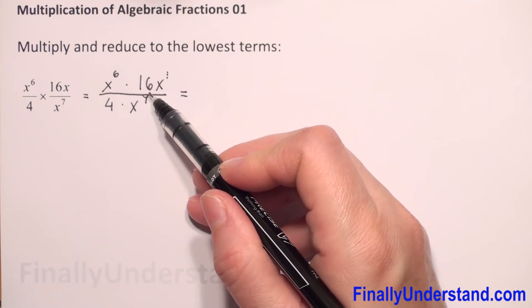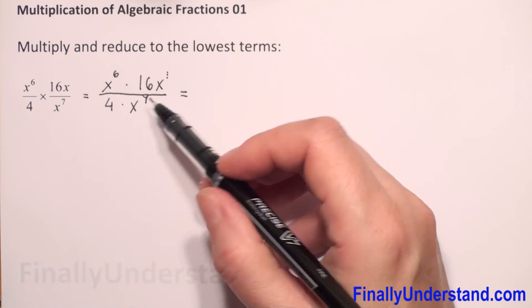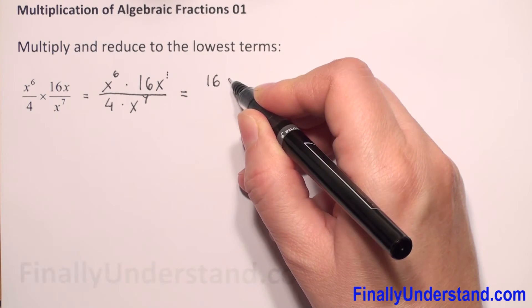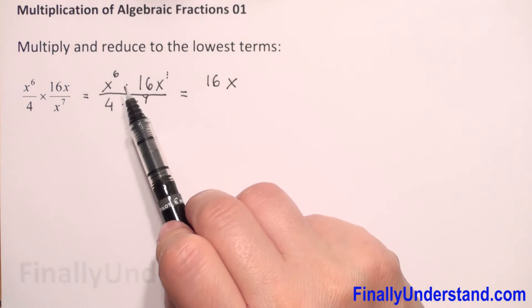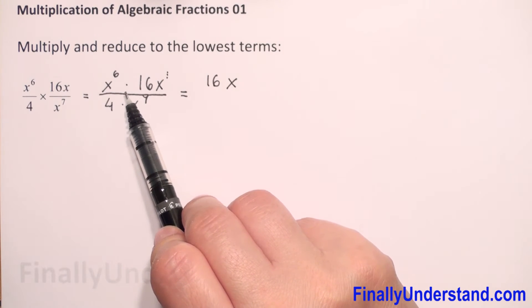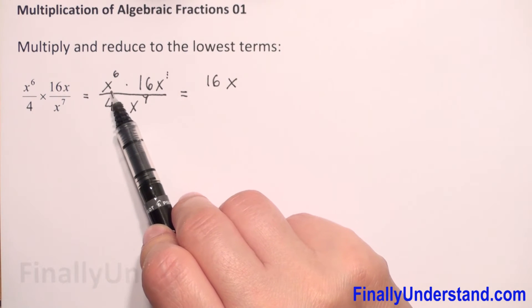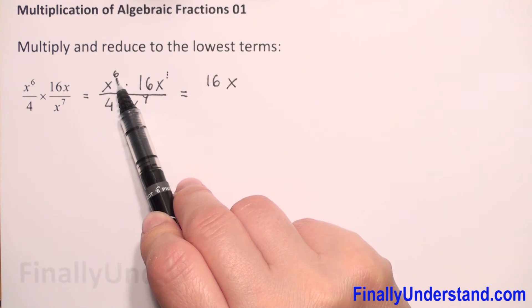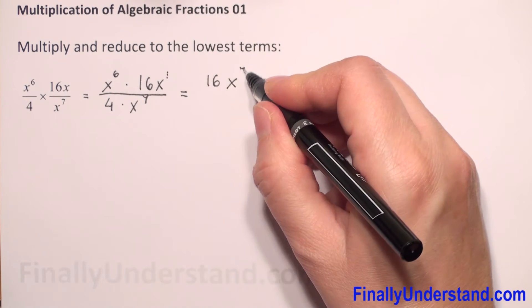We always put the numbers first. So in the numerator we have 16, and next we have base x. We add the exponents because we have multiplication. We can do this only when we have multiplication and the same base. So we add exponents: 6 plus 1 is 7.